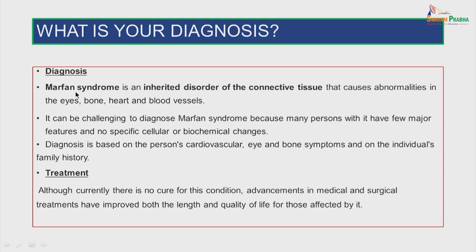The diagnosis for the clinical scenario given in the first slide is Marfan syndrome. It is an inherited disorder of the connective tissue that causes abnormalities in the eyes, bone, heart and blood vessels. It can be challenging to diagnose Marfan syndrome because many persons with it have few major features and no specific cellular or biochemical changes. The diagnosis is based on the person's cardiovascular, eye and bone symptoms and on the individual's family history. Treatment: although currently there is no cure for this condition, advancements in medical and surgical treatments have improved both the length and quality of life for those affected by it.